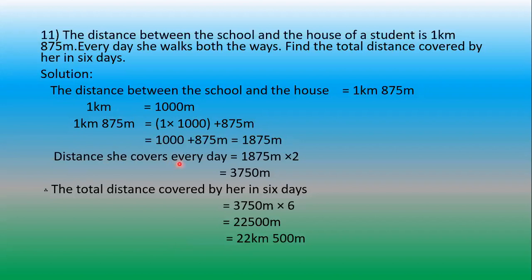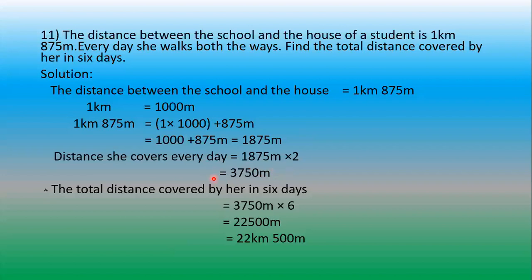That 1875m is the distance she covers when she goes to school. She walks both ways — coming back from school to home she is also walking. So we multiply the one-way distance by 2 to get the total distance she covers in a day. Distance covered every day: 1875 × 2 — going time and coming time. When we multiply, we get 3750 meters. That is the distance she covers in 1 day.